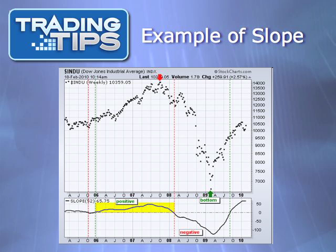The primary purpose of slope is to identify trend direction. Notice in this example what your success rate would have been if you bought the moment slope became positive and sold when it turned negative. You would not be buying at the bottom or selling at the top, but you would have made a considerable profit. Similarly, if you sold the market short at the moment slope went negative in 2008, and then covered when it went positive again, you would have also locked in some very nice gains.